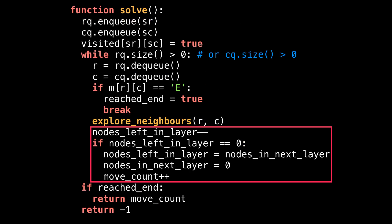This next block of code is used to track the number of steps we took getting to the dungeon exit. Every time we finish a layer of nodes, we increment the number of steps taken. We know how many nodes are in each layer because we kept track of that in the explore_neighbors method. When the number of nodes in the current layer reaches zero, we know to increment the move_count.